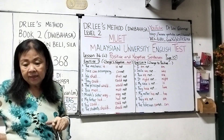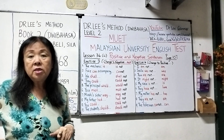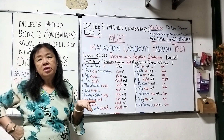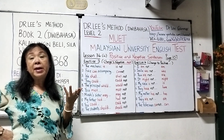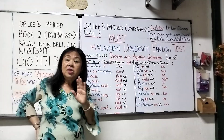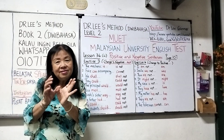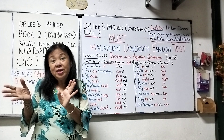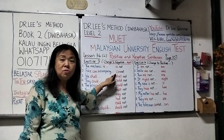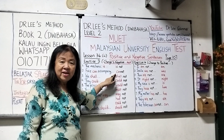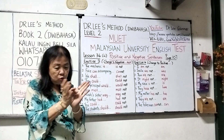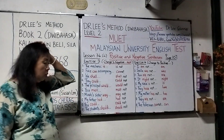Number two: 'Faiz can accompany us to the park tomorrow.' Change to the negative — cannot. So: 'Faiz cannot accompany us to the park tomorrow.' Now notice: the word 'not' is a separate word next to the verb, except for 'cannot.' I want you to remember this — 'cannot' is one word, it is not two words. You join them together.